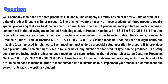The cost of producing each product on each machine is summarized in the following table. Cost of producing a unit of product — Machine 1: A=$13, B=$9, C=$10; Machine 2: A=$11, B=$12, C=$8.